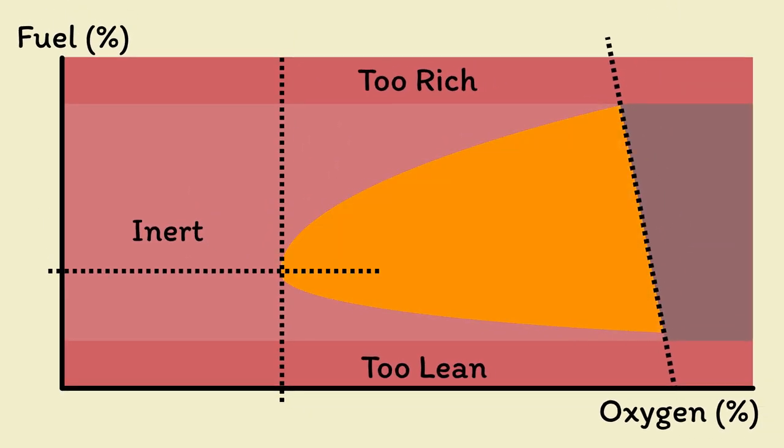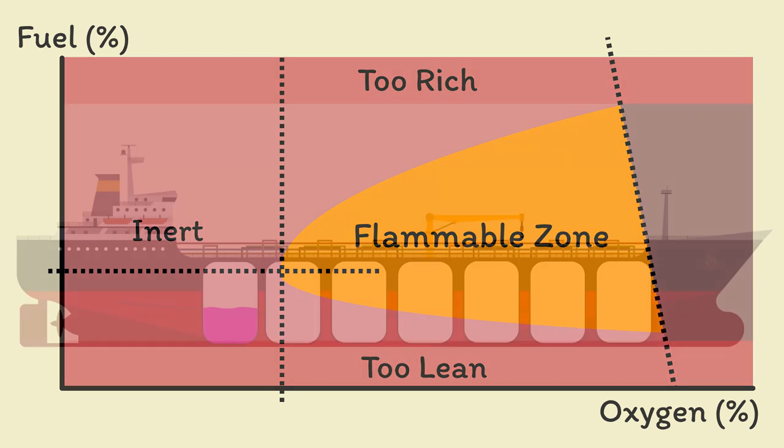Within this area, we have the flammable zone. If the proportions fall within this, a heat source will ignite the mixture. So, how can we control that?